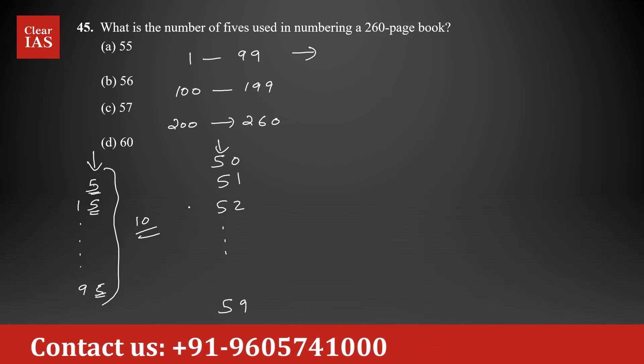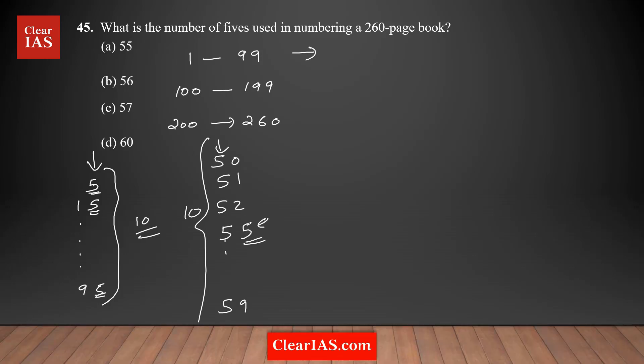If you take 55, already this 5 is counted here, this 5 is already counted here, so I don't need to bother about that. I'm just looking at the tens digit 5. So total number of 5s here is 10 plus 10, which is 20 5s from 1 to 99.